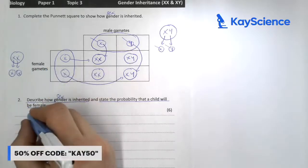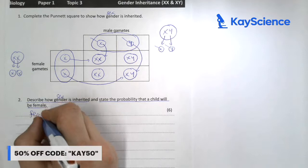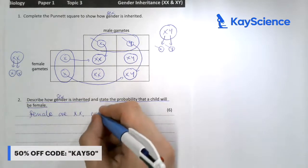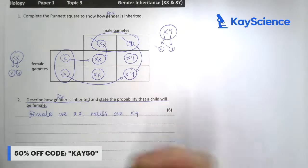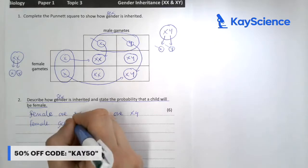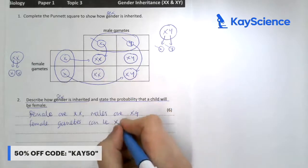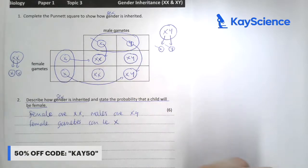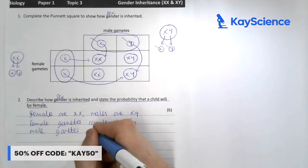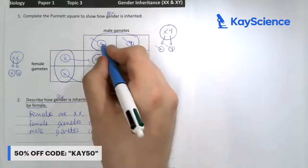Before we do that, we say females are XX, males are XY. Female gametes can be X or X, so X only, whereas male gametes can be X or Y.